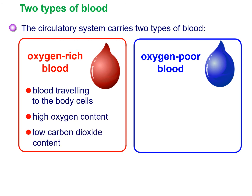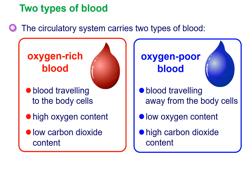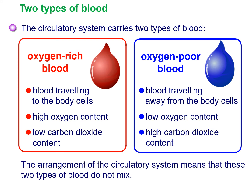All of the oxygen-rich blood is travelling to the body cells — it has high oxygen content and low carbon dioxide content. Note that we're not saying it has no carbon dioxide; it is low carbon dioxide. The oxygen-poor blood is the opposite: it's blood travelling away from the body cells, with low oxygen content and high carbon dioxide content. The arrangement of the circulatory system means these two types of blood do not mix, keeping it as efficient as possible.